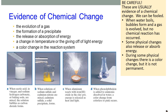How do you know if a chemical reaction happened? Some of the evidence of a chemical reaction is the evolution of a gas, the formation of a precipitate (which is a solid), the release or absorption of energy, a change in temperature or giving off of light, or a permanent color change.